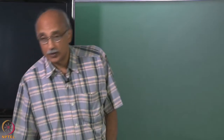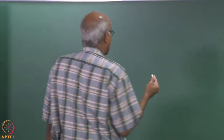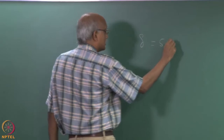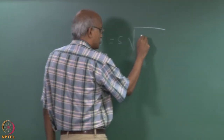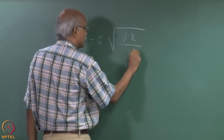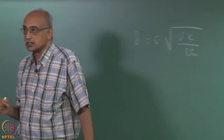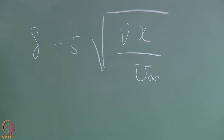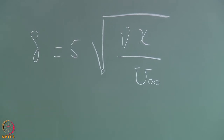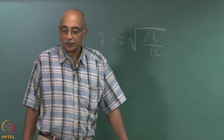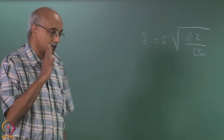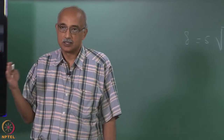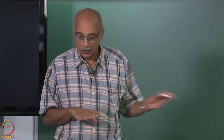Before we do that, one quick correction. In the last lecture I was talking about the formula for the boundary layer thickness. I think I made a mistake. The boundary layer thickness is 5 times the square root of ν times x divided by u∞, where ν is the kinematic viscosity, x is the downstream distance, and u∞ is the approach velocity. Dimensionally it checks out, and as the velocity increases the boundary layer thickness should decrease. This formula has the right qualitative dependence, so just make this correction in your notes.